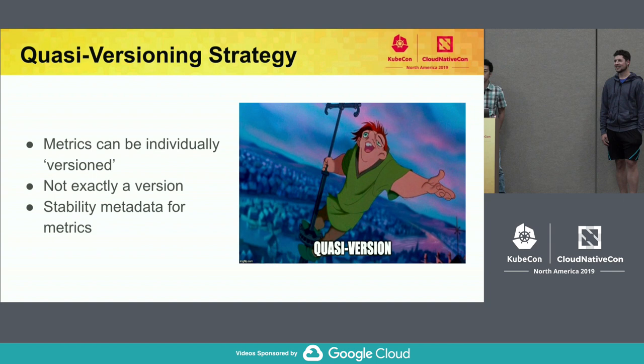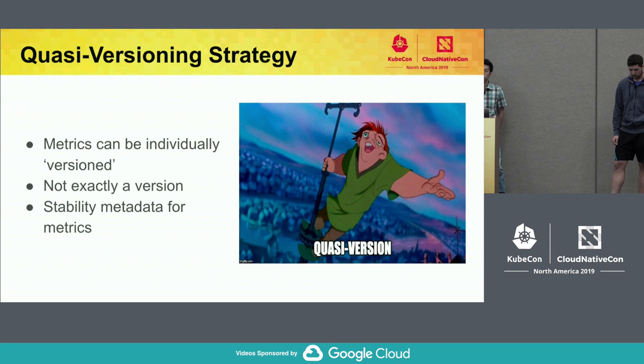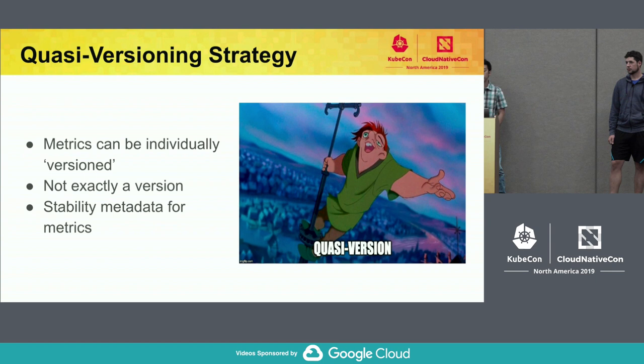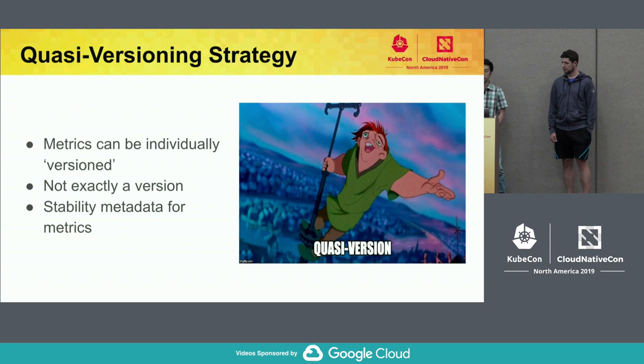Metrics can be considered to be individually versioned, and this is super helpful. When you are versioning metrics by the endpoint, if you want to remove a single metric, that stable endpoint now has to be bumped and all of the other metrics from that endpoint have to be moved to a new version. This would be a huge pain for someone ingesting metrics. Our quasi-versioning strategy doesn't actually give metrics a version per se — it gives stability classes by attaching stability metadata to the metric.